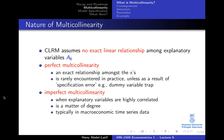So that's one case. The other case is imperfect multicollinearity, where the explanatory variables are highly correlated. This is a matter of degree, and it is a very typical case with macroeconomic time series data.